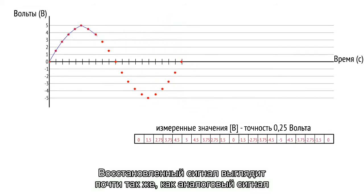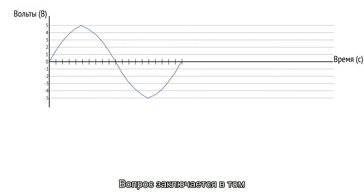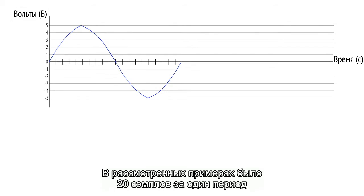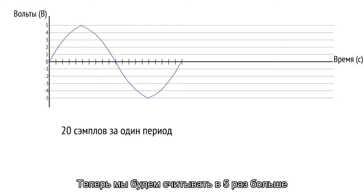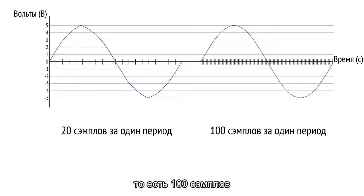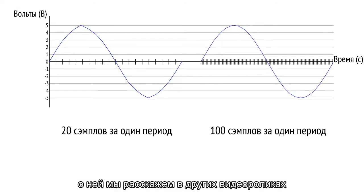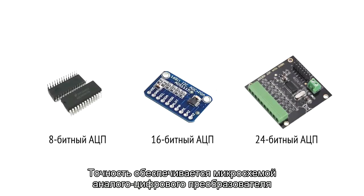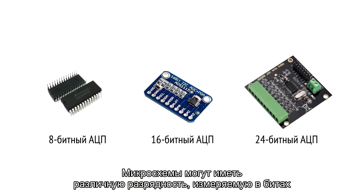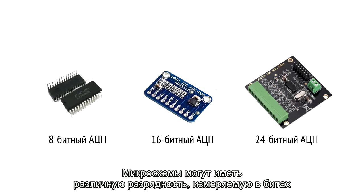The question is also how often the voltmeter reads the values. The examples we used had 20 samples in one period; now we use five times that number — 100 samples. There is also a context with the aliasing problem, which we will explain in another video. The accuracy is determined by the analog-to-digital converter chip, and chips can have various numbers of bits.